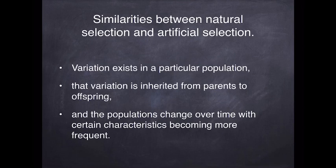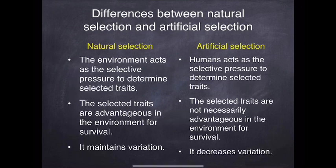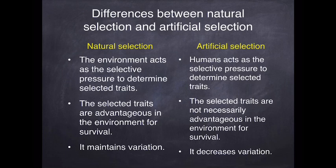How they are different — and this is the important bit — with natural selection the environment is the selective pressure. It is the environment and changes in the environment that determine which characteristics are advantageous and therefore get passed on. With artificial selection it is human beings doing the selecting: 'I want a dog that has curly fur, so I'm going to select the ones with the curliest fur and mate those dogs together.'